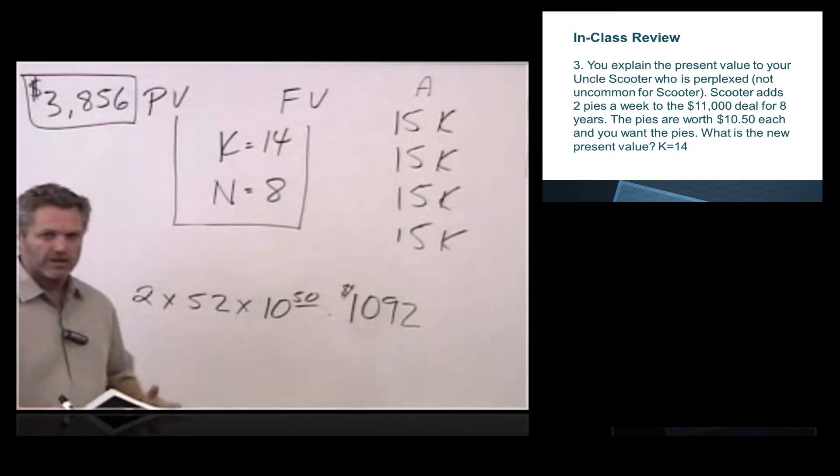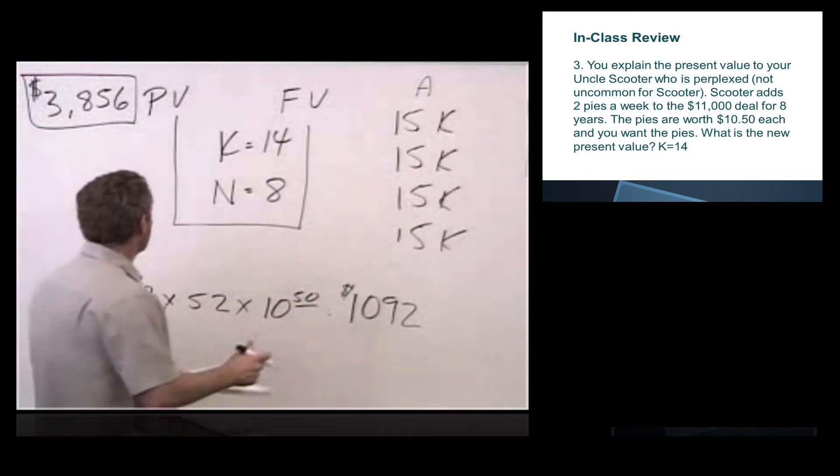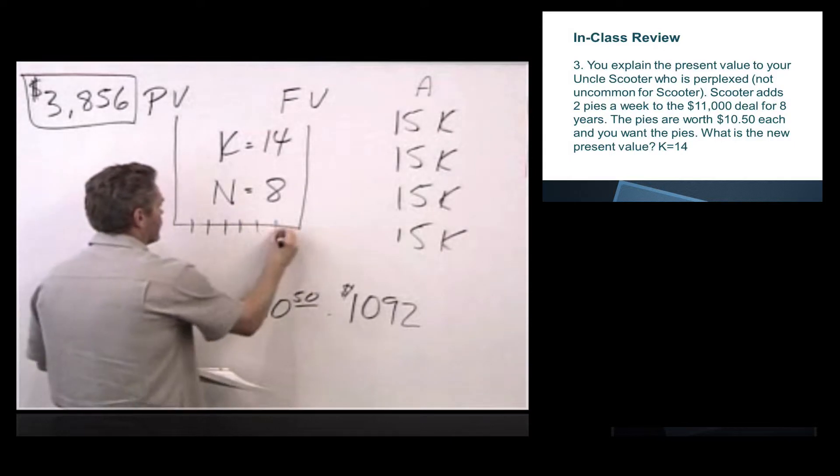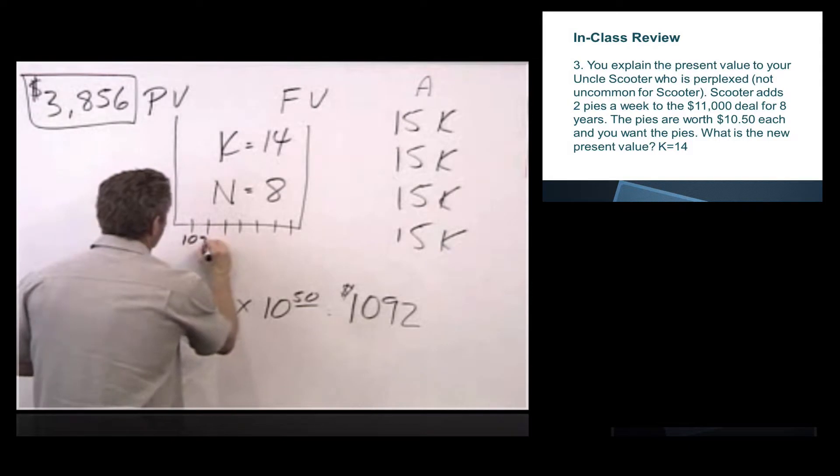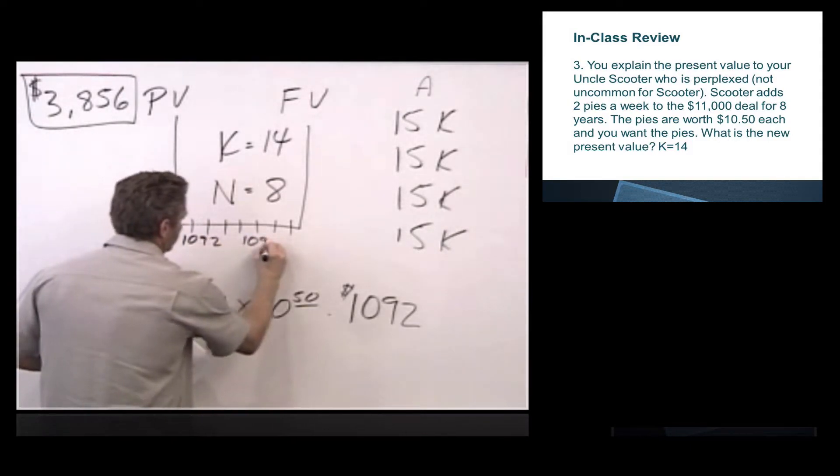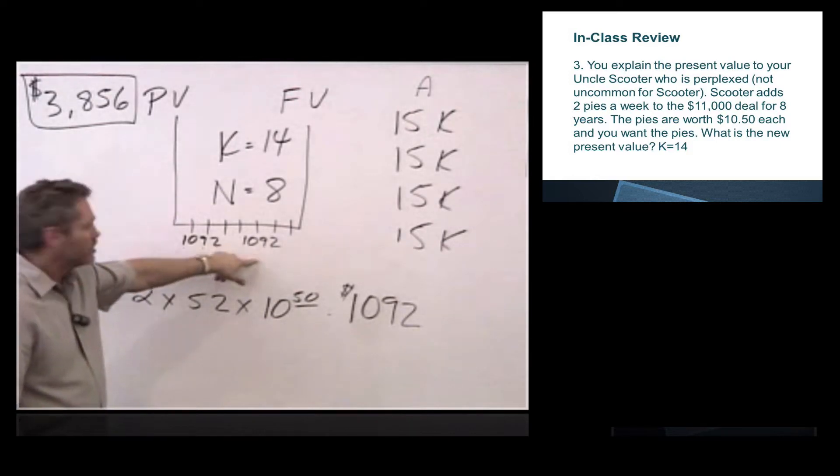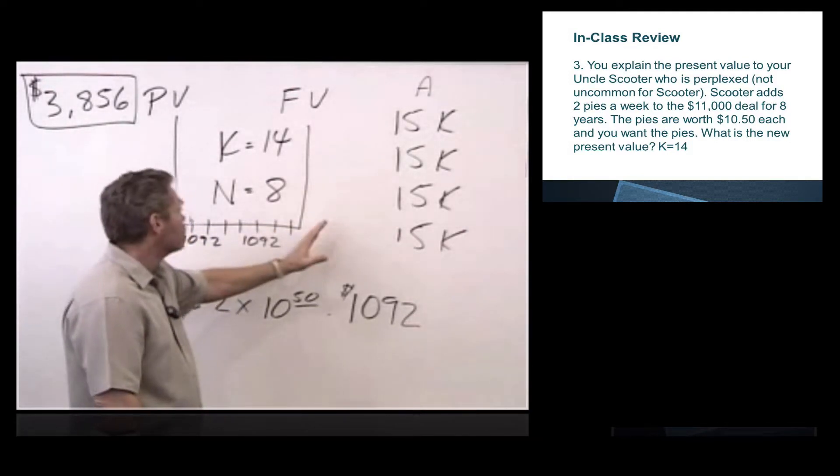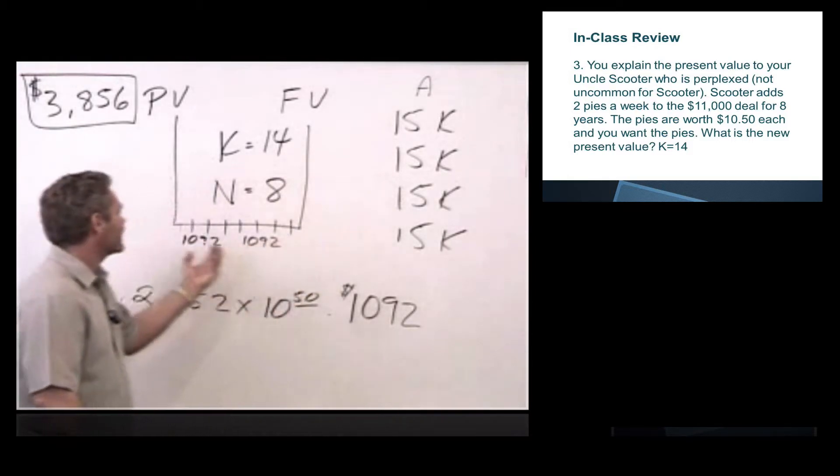So a whole bunch of pies coming to us. We're going to get pies this year, a year from now, two years from now, three years from now, four years from now. So we know this is an annuity. So a lot of times put these kind of hash marks here so we know it's an annuity. We're going to be receiving 1,092 of pies. And so the question then is do we take this value of pies and move them out into the future to see what they're worth in the future, or do we discount the pies back to today?